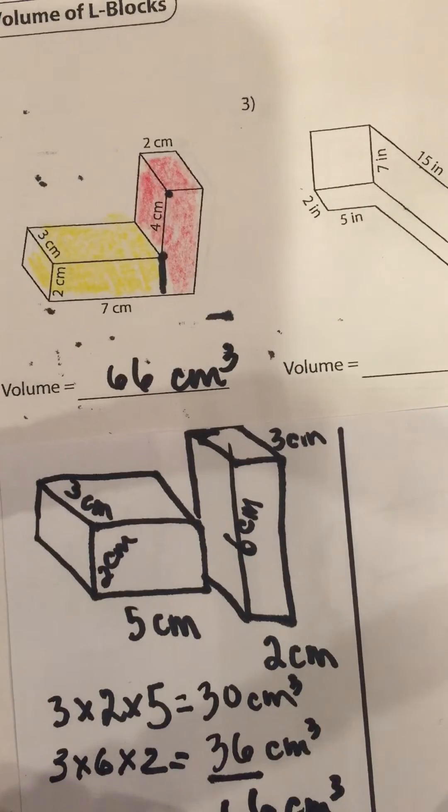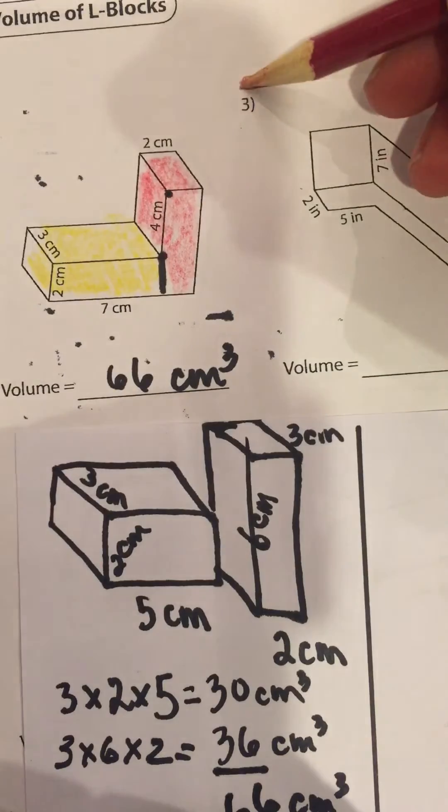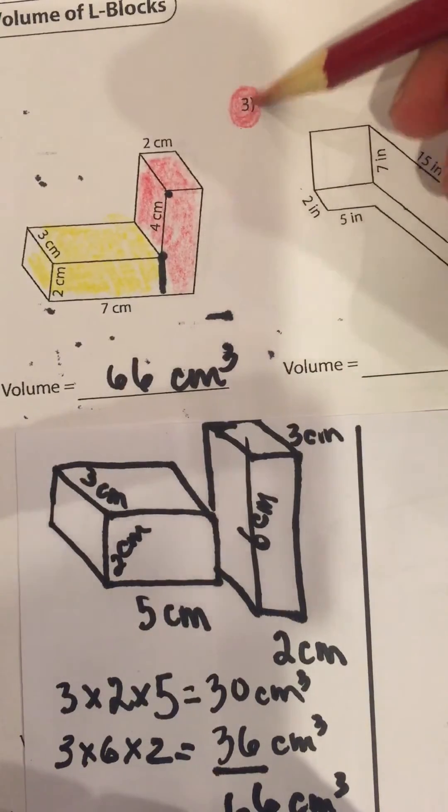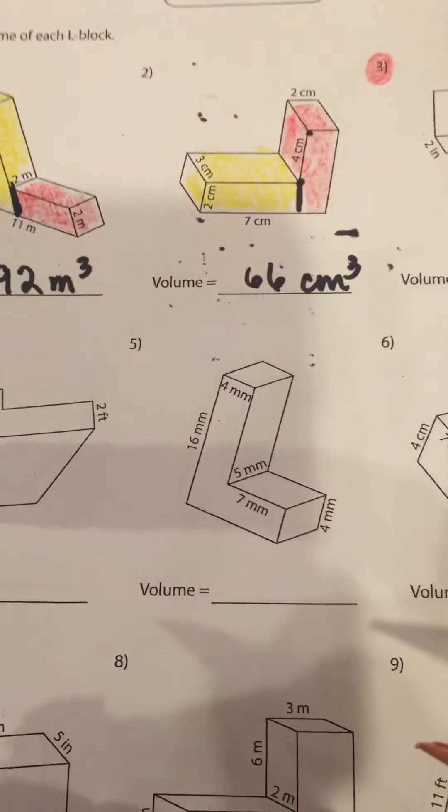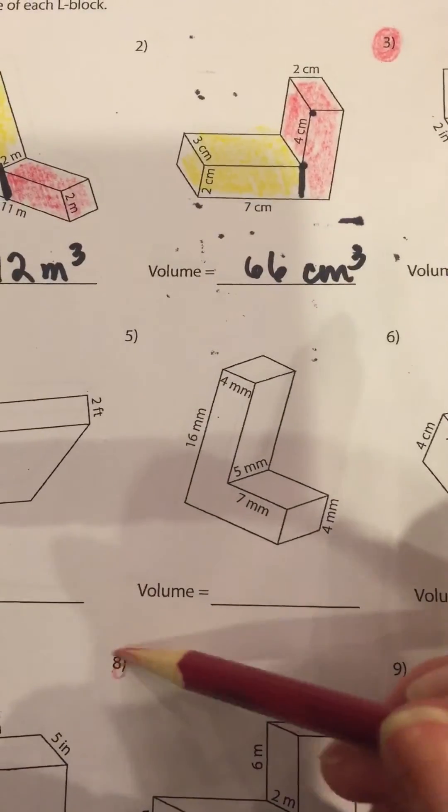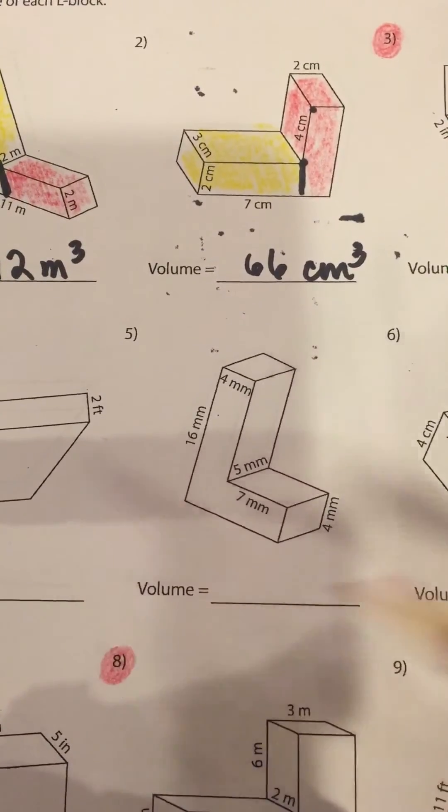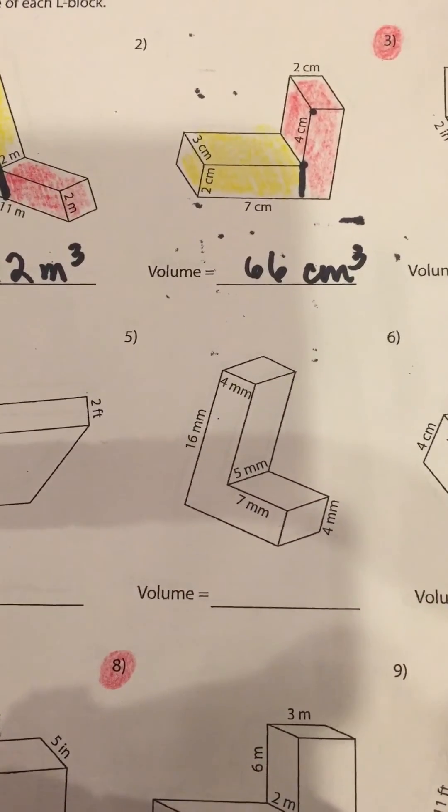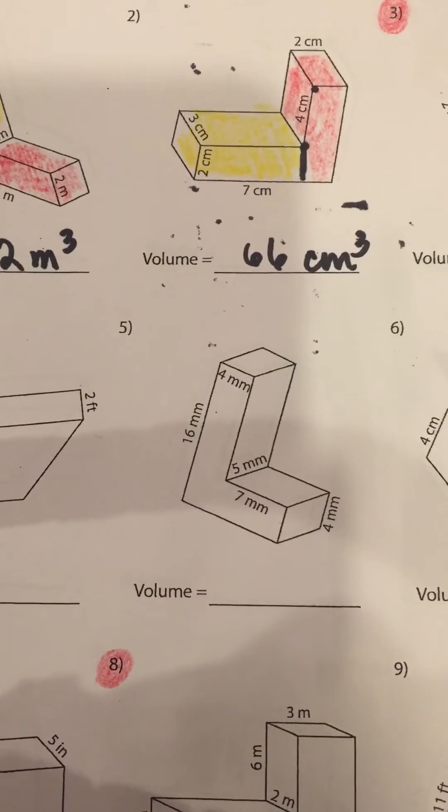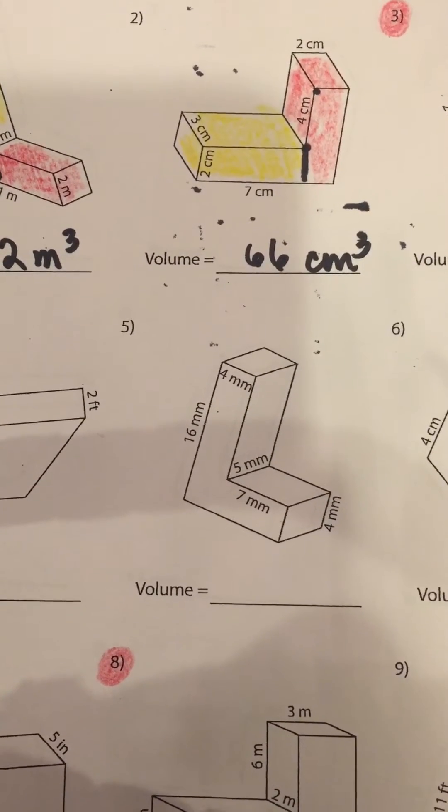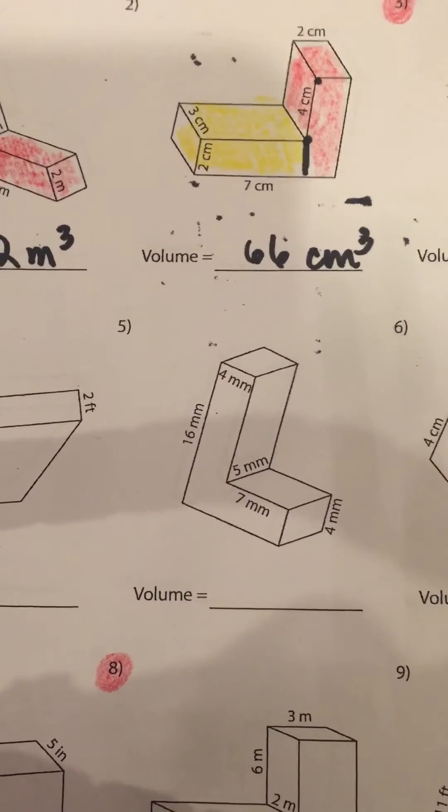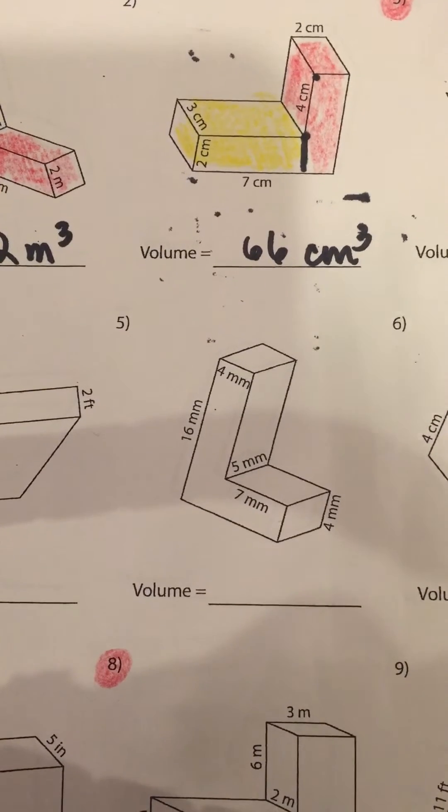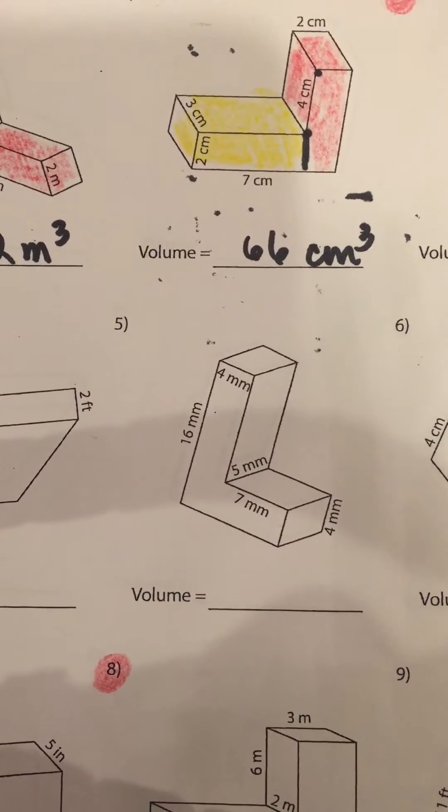Okay, I hope that was helpful. You're going to work on numbers three through eight on your own. When you're done with three through eight, you may resume playing the video and I will walk you through solving the last problem on your paper, number nine. Okay, pause now.